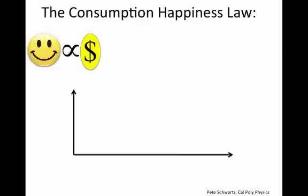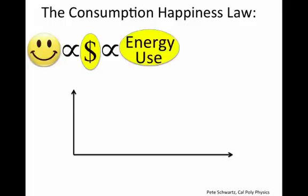Happiness is proportional to wealth because we need wealth to provide us with our needs. Wealth is proportional to energy use because it's through the conversion of energy that we generate wealth. Energy use is proportional to carbon dioxide because most of our energy is converted through combustion.